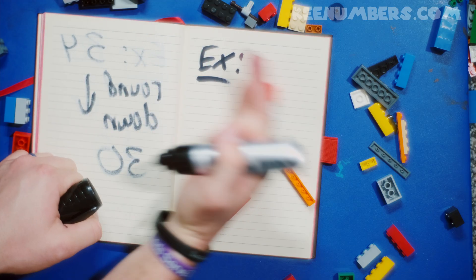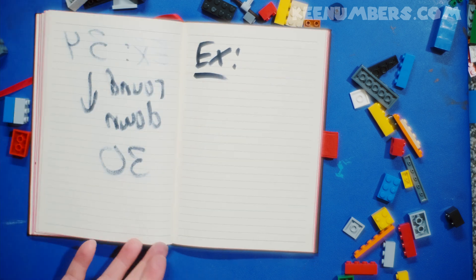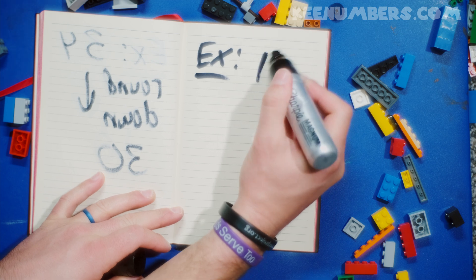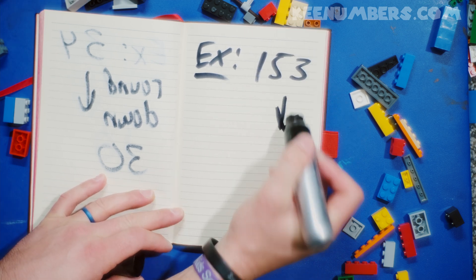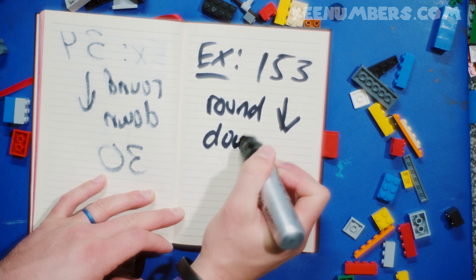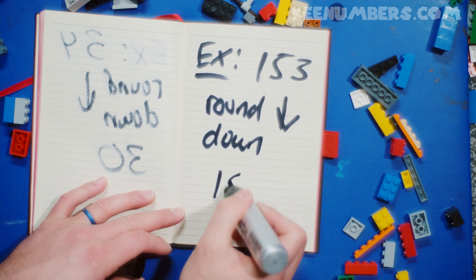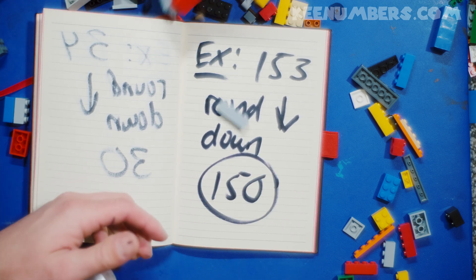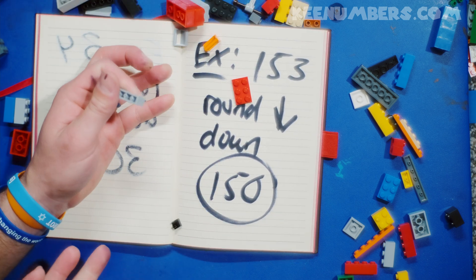Let's say you have a big number — let's say you have 153. If you want to round down to the nearest ten because it ends in three, well then what's the nearest ten? It's 150. So 153 bricks you could say is approximately 150 bricks.